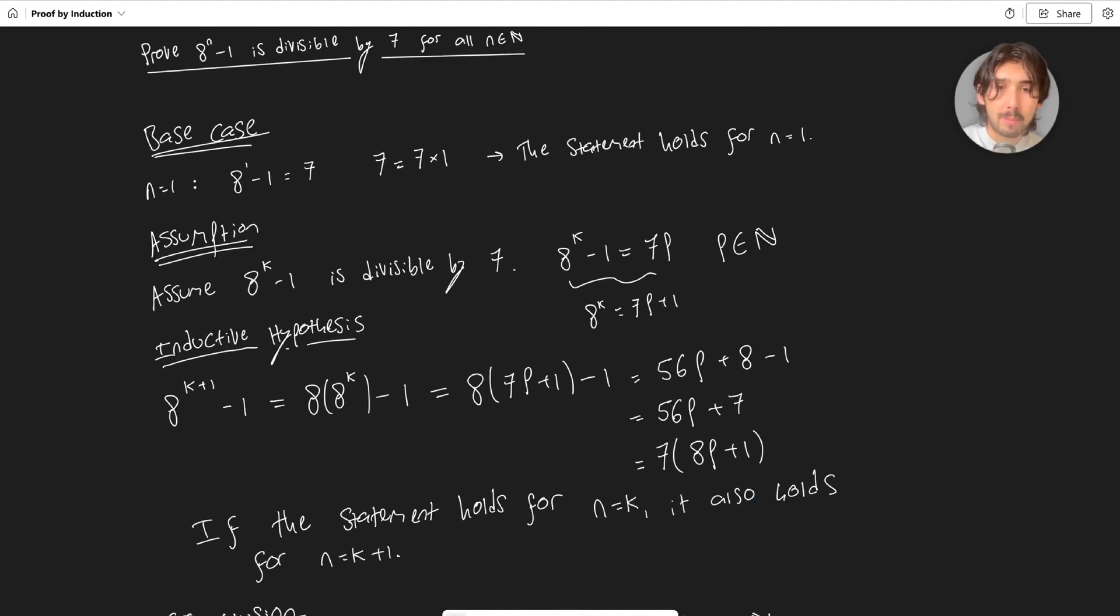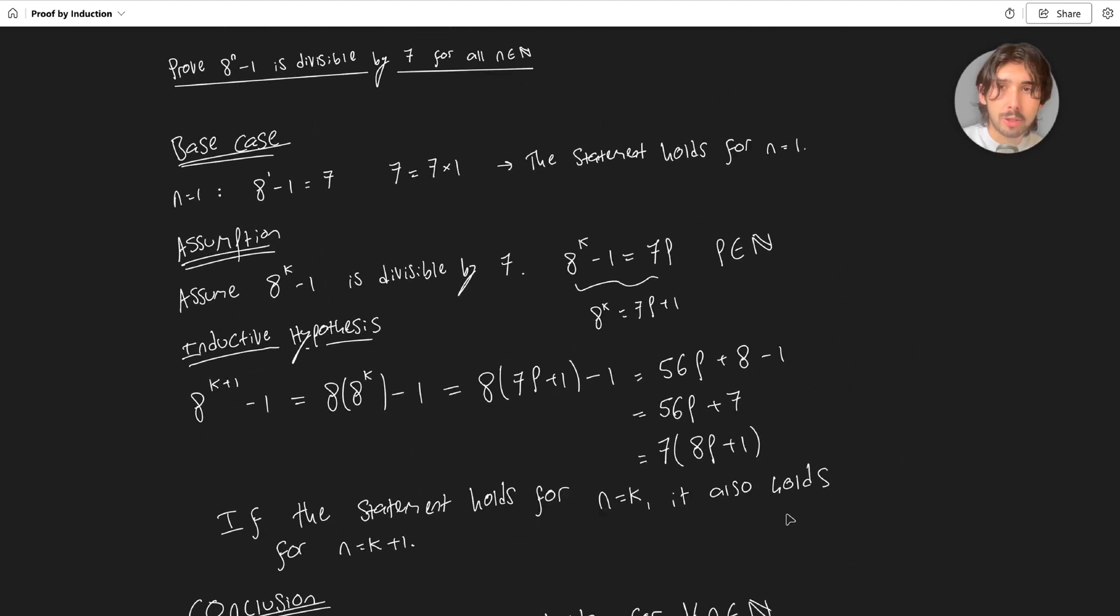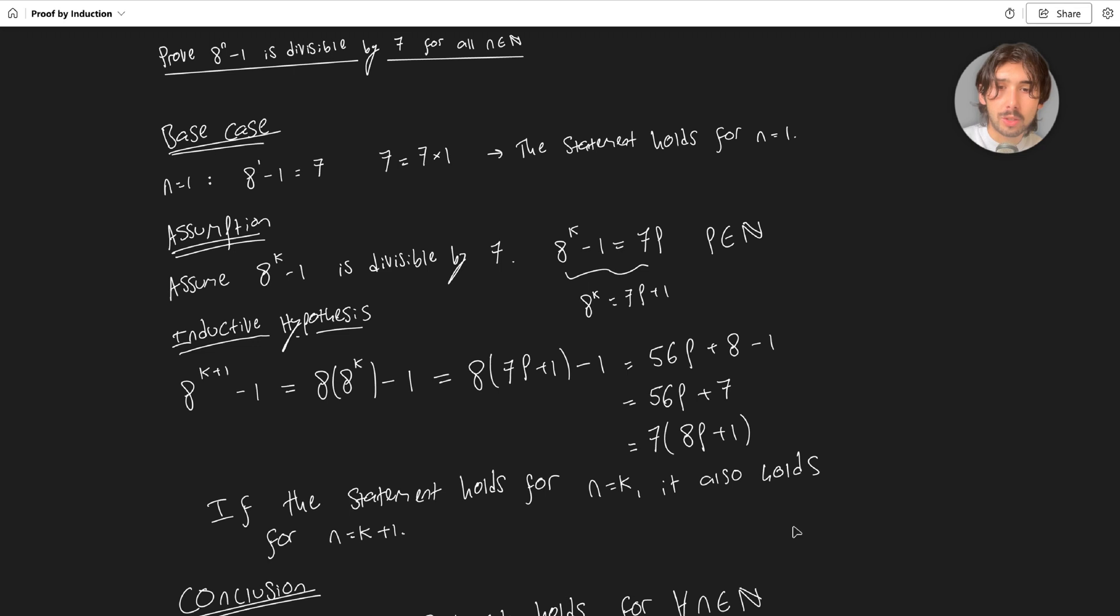There you go, it's all on the same page there. That is the entirety of the proof that 8 to the power of n minus 1 is always divisible by 7 for every single natural number. If you enjoyed the video, please like, subscribe, share with your friends and family, and of course guys, I will see you in the next one.